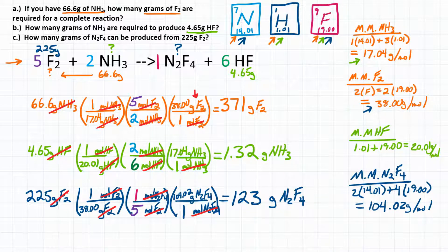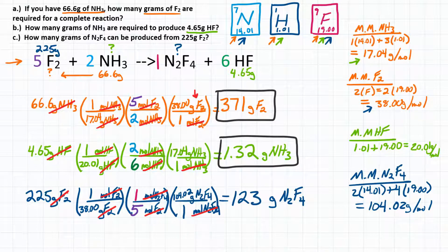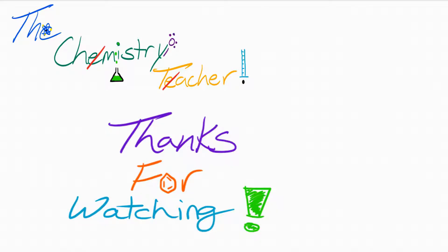So our final answers: Part A — 66.6 grams of NH3 requires about 371 grams of F2. Part B — to produce 4.65 grams of HF requires 1.32 grams of NH3. Part C — 225 grams of F2 can produce 123 grams of N2F4. If you want to see another example, click in the top right. Please like this video if it helped, check the description below for additional resources, and subscribe and ring the bell for new videos. Thank you so much for watching.